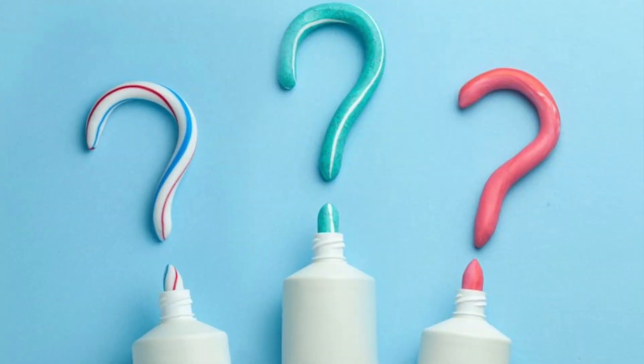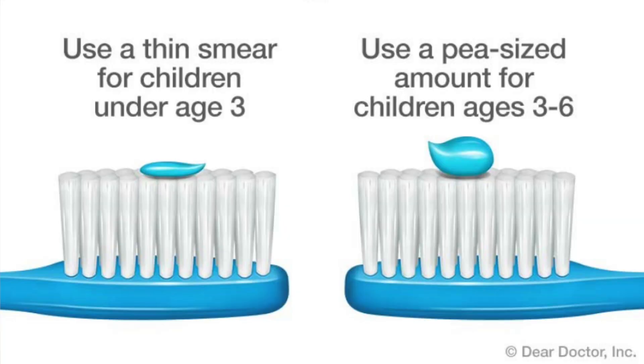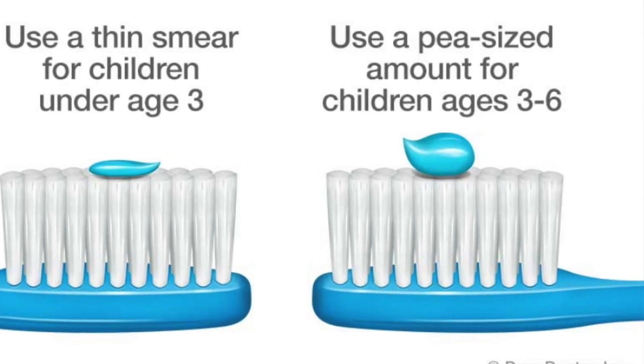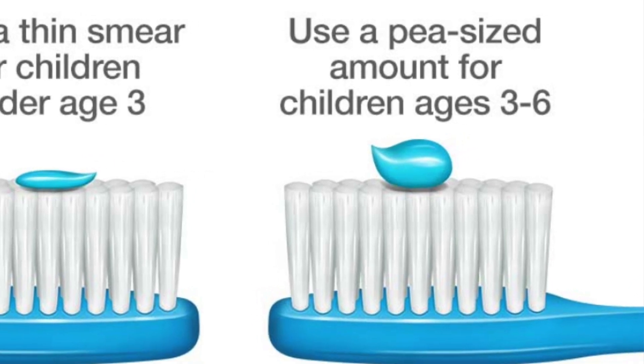I'd like to guide you on how much toothpaste is required for your child. For infants under three years, we recommend just a small smear on the toothbrush — almost the size of a grain. For children aged between three and six, use toothpaste the size of half a pea. For children who are six and above, a full pea size is what is best advised.